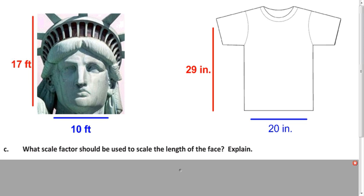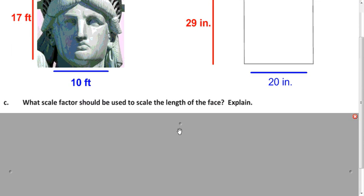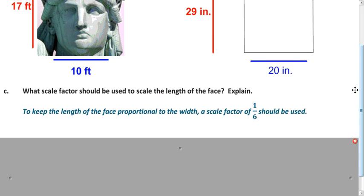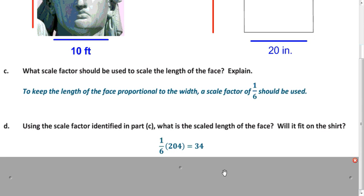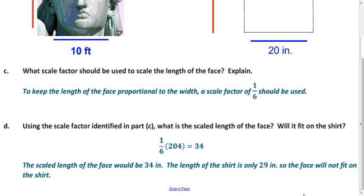Now, what would the corresponding length be? Here are the dimensions on the t-shirt. If we apply the scale factor of one sixth to the height of the face — which is 17 feet, or 204 inches — we get one sixth times 204, which equals 34 inches. But the length space available on the shirt is only 29 inches. 34 is too big, so we can't scale using the width — we have to scale using the length instead.